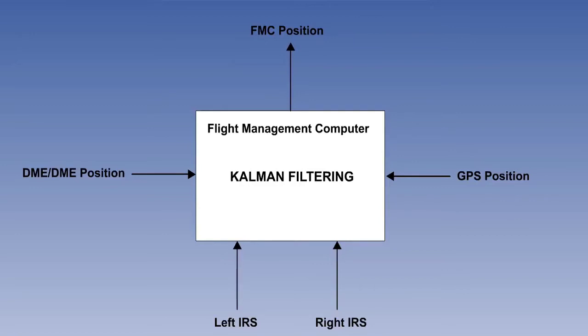Instead of having a single standalone system with its own present position display, it became normal to have two or even three inertial sensors which pass their outputs to a central computer. Each of these inertial sensors is called an Inertial Reference System, and its outputs go to the flight management computer.